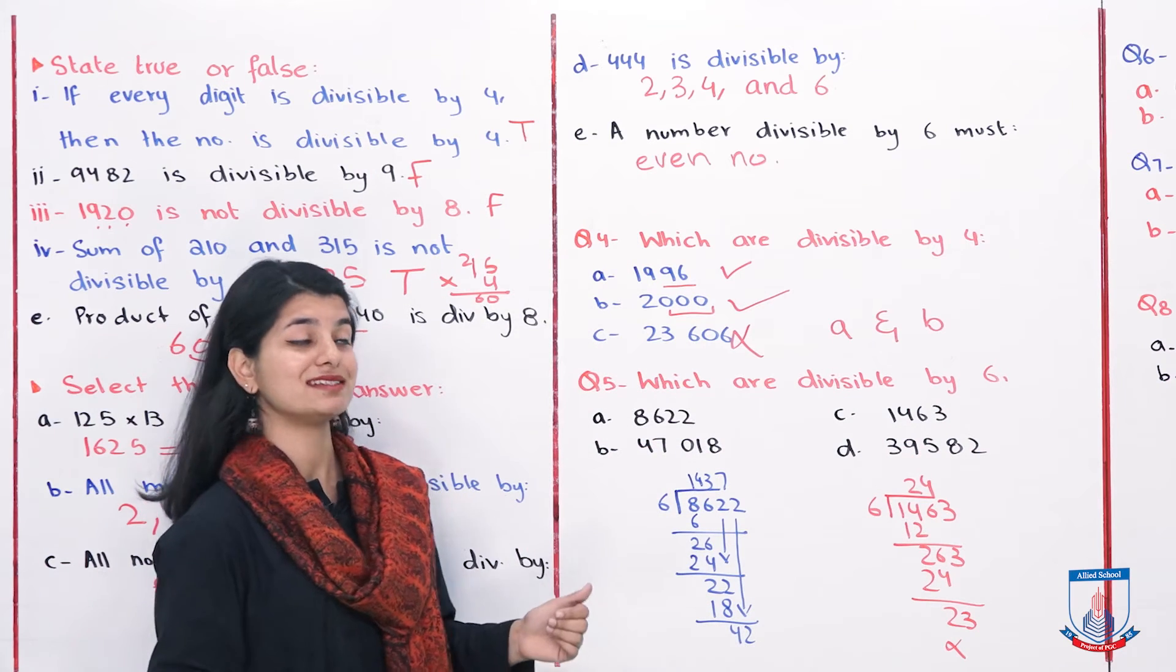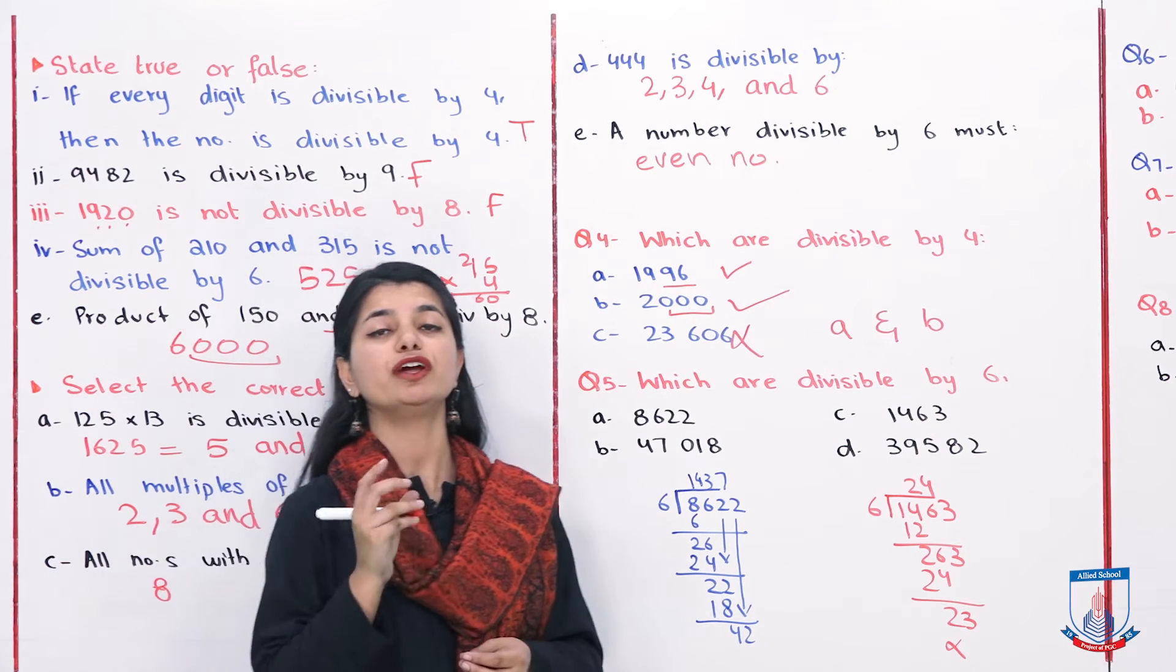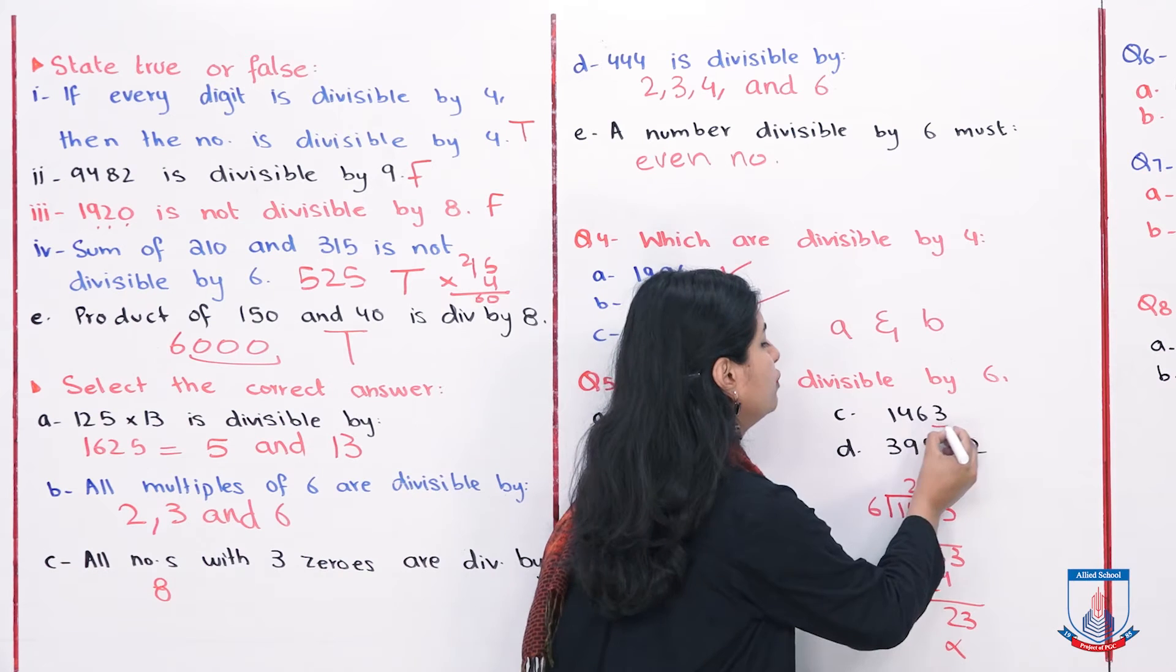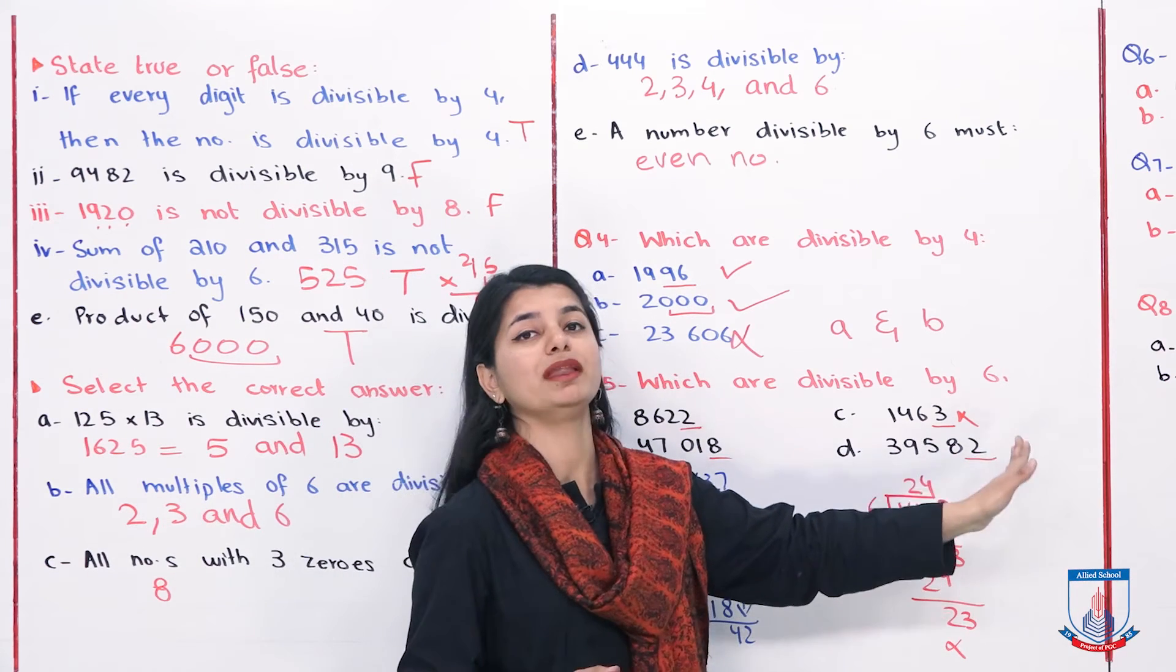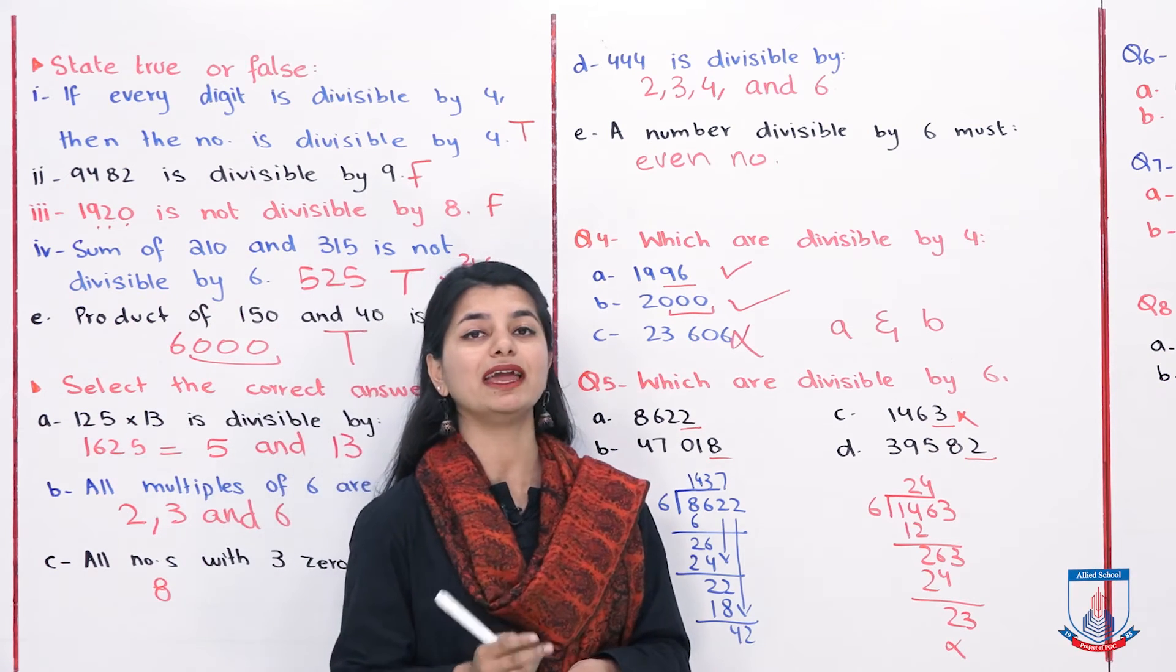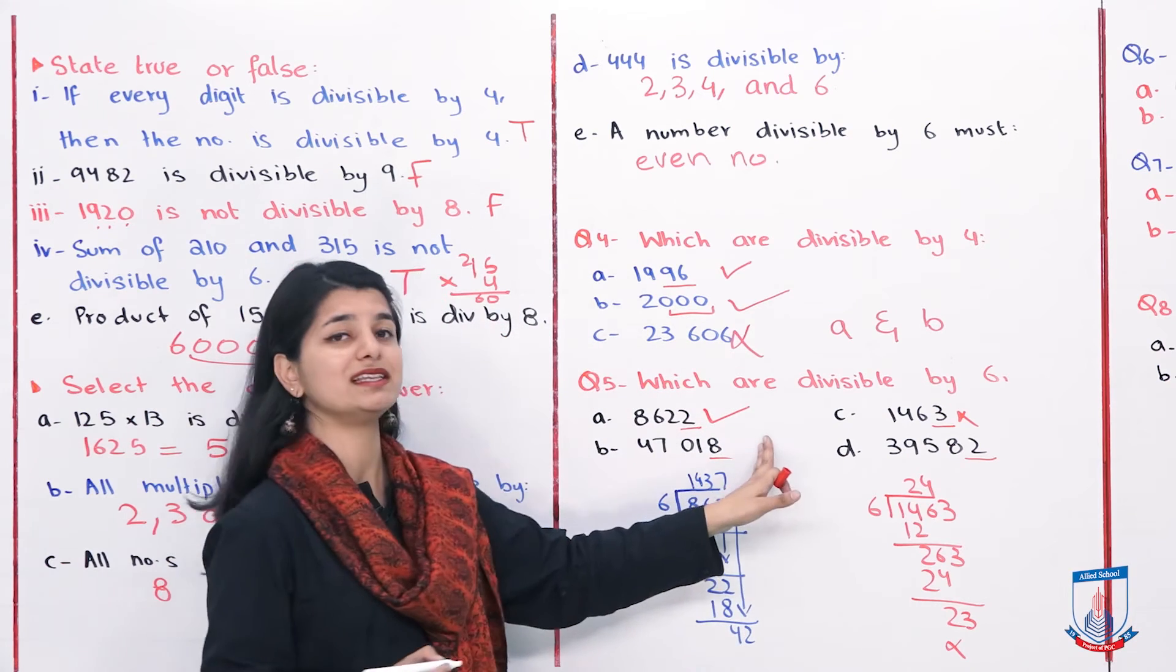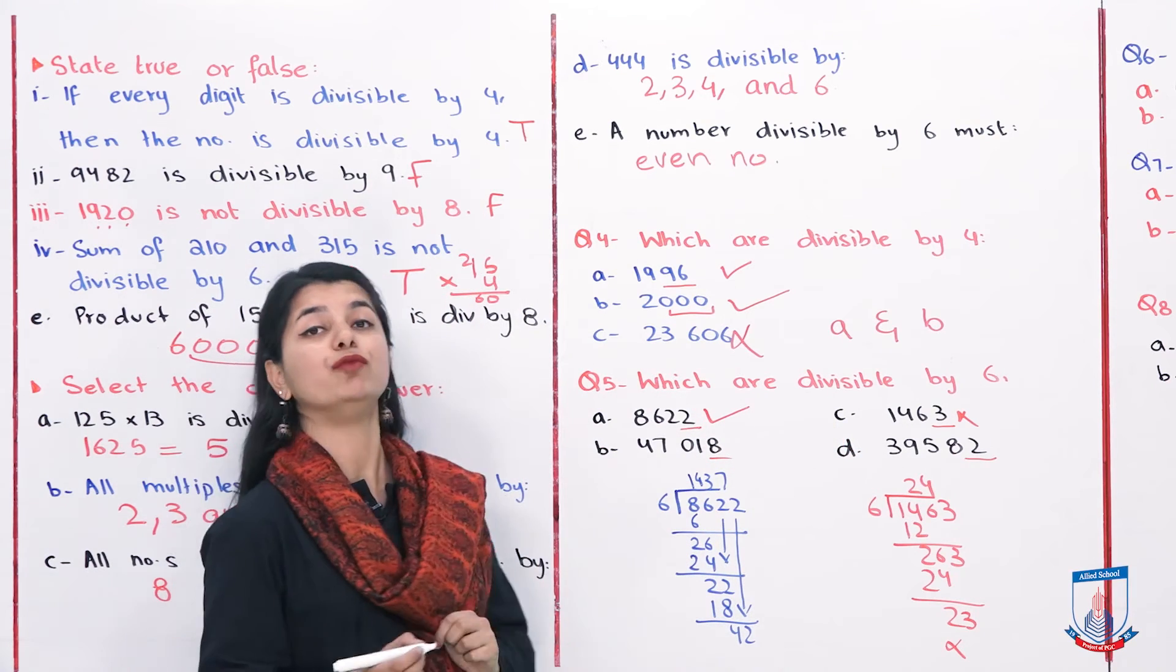Next we have: which numbers are divisible by 6? So we have to check which numbers are divisible by both 2 and 3. First, we'll check for 2, which is easier. 8622 ends in 2, so it's divisible by 2. 14748 ends in 8, so it's also divisible by 2. The one ending in 3 is not divisible by 2, so we eliminate that option. Now we check for divisibility by 3. The sum of digits for 8622: 8+6 is 14, 14+2 is 16, 16+2 is 18. So it's divisible by 3. Hence this option is selected because it's divisible by both 2 and 3, so divisible by 6.